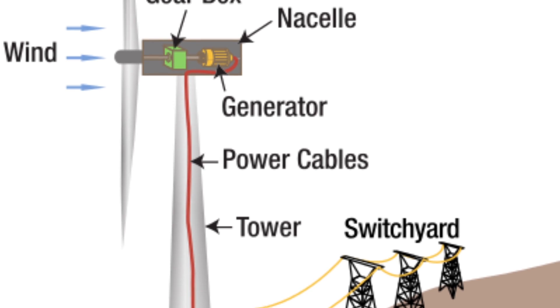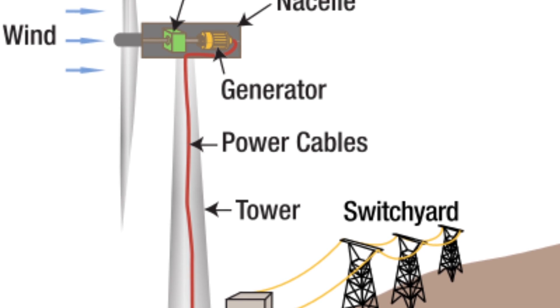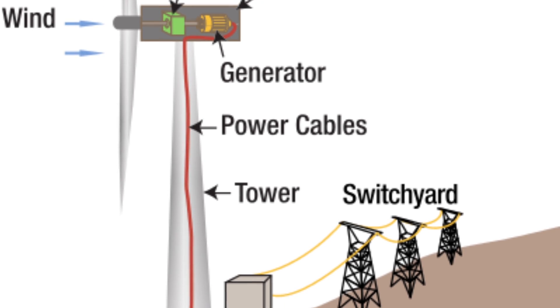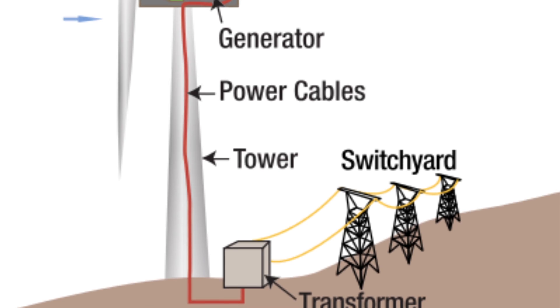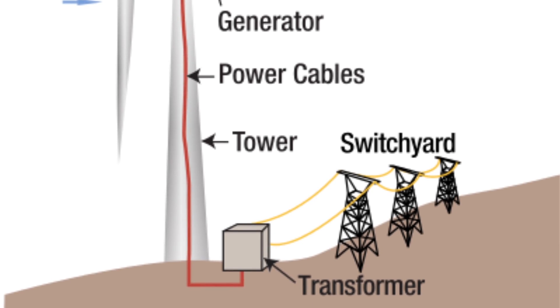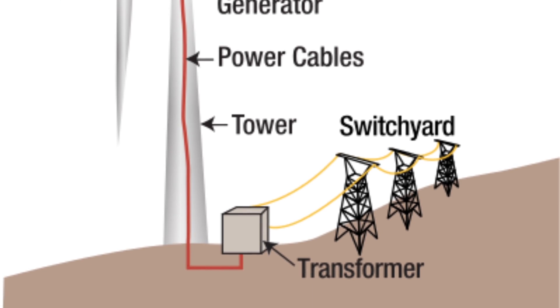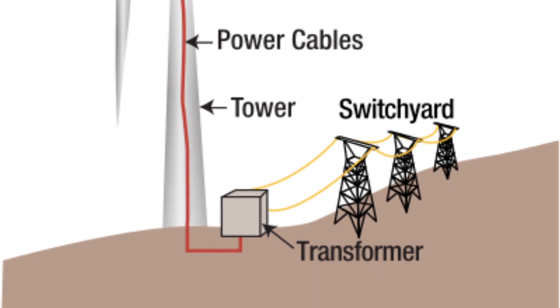The energy produced by the separate turbines is connected to a transformer, which converts it into electricity we use in our homes.